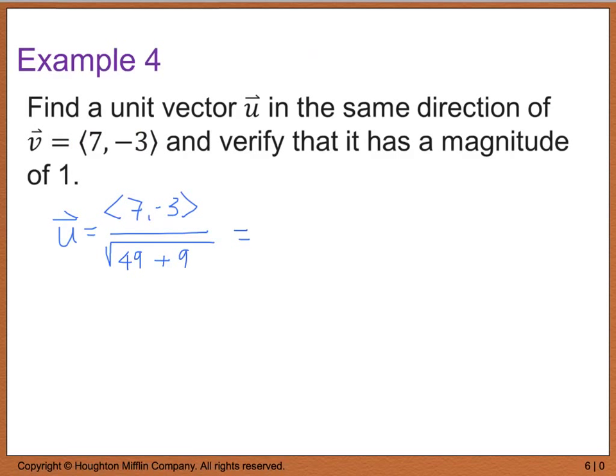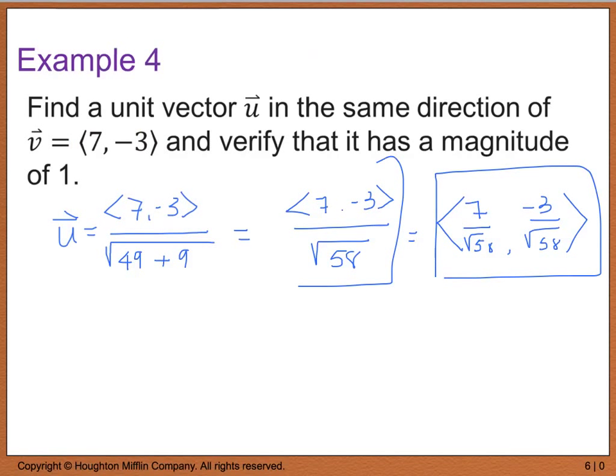So when I simplify this, then I end up with the vector 7, negative 3, divided by the square root of 58. Now, we can actually break this up, and we can write this as 7 divided by the square root of 58, comma, negative 3 divided by the square root of 58. Or we could even factor out the 1 over 58. So I'll accept this or this, or if you wanted to factor out the 1 divided by the square root of 58 and write it like this, you may also do this as well. All three of these are equivalent.